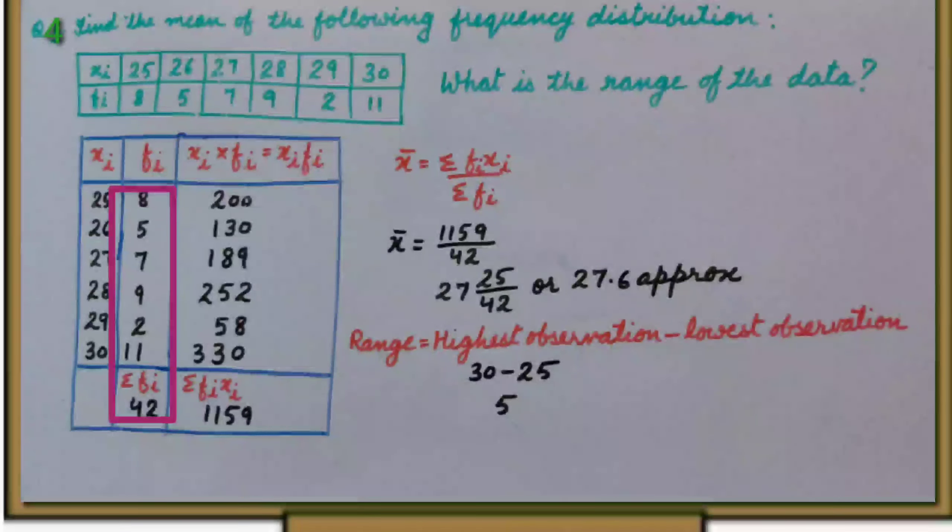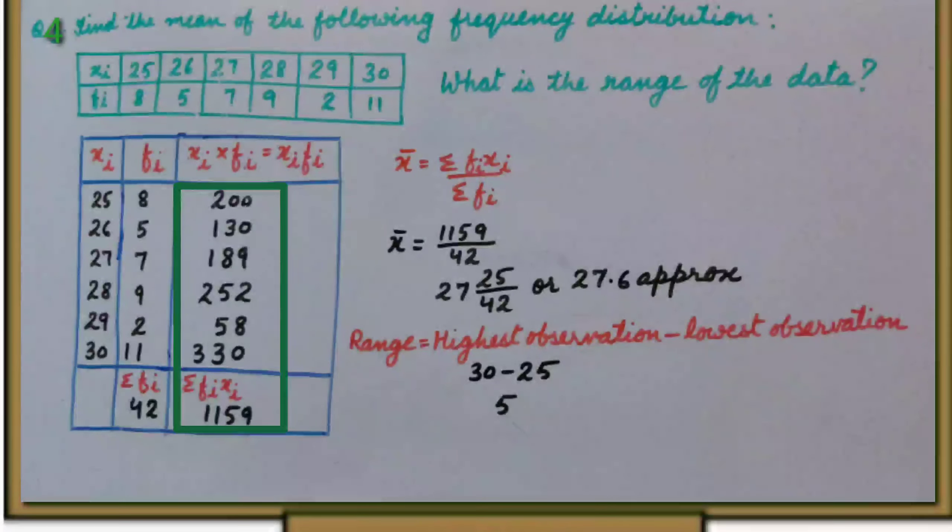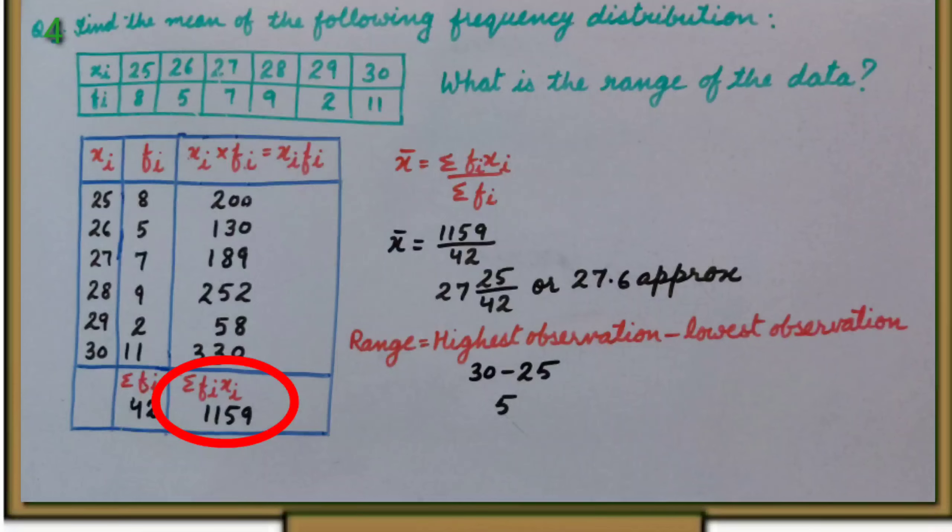Then, we will find sum of fi and sum of xi fi. So, sigma fi is 42, sigma xi fi is 1159.